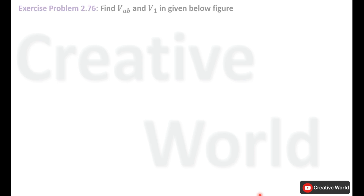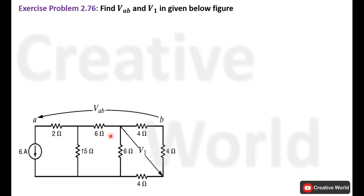Now let's move towards the problem. Exercise problem number 2.76: find voltage VAB and V1 in the given figure. This is the circuit diagram of the given problem. Inside this network we have to find the voltage between the two points labeled as VAB and between the two points labeled as V1.